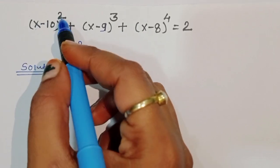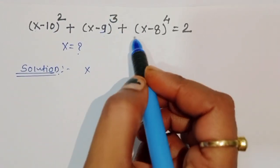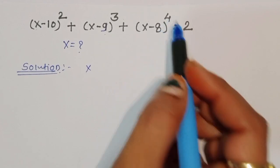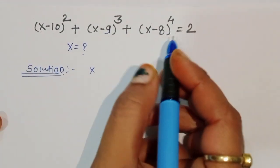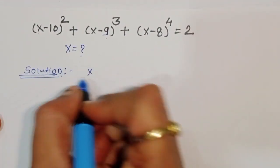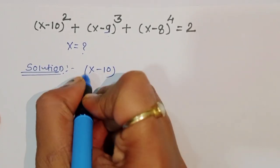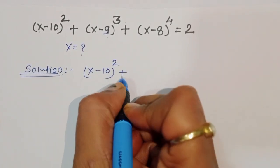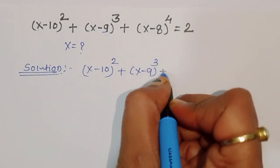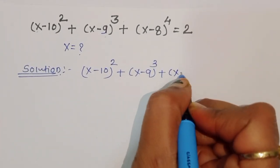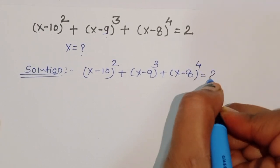We are given (x-10)² + (x-9)³ + (x-8)⁴ = 2. We have to find out the value of x. Let's start the solution.